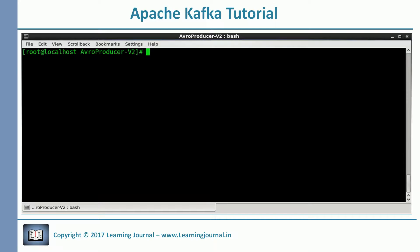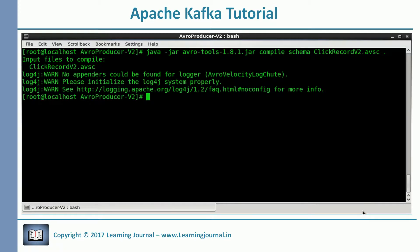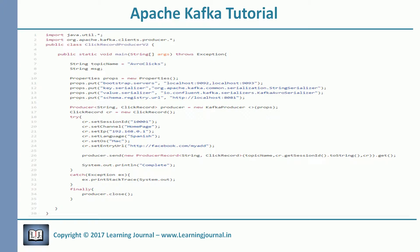We modified our schema. We need to generate code for this new schema. Now we need to create a new producer and send some messages in the new format. Here is my code for the new producer. The code is the same as earlier, but this time I am creating a click record object using the new schema code. Then I am setting some fields and finally sending it to the Kafka broker. This producer will send a message in the new format.